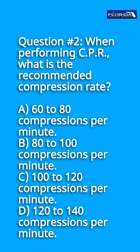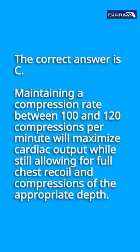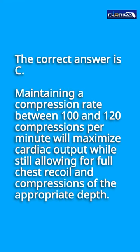Question number 2: When performing CPR, what is the recommended compression rate? A. 60-80 compressions per minute. B. 80-100 compressions per minute. C. 100-120 compressions per minute. D. 120-140 compressions per minute. The correct answer is C. Maintaining a compression rate between 100 and 120 compressions per minute will maximize cardiac output while still allowing for full chest recoil and compressions of the appropriate depth.